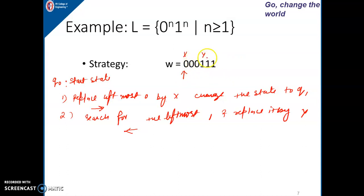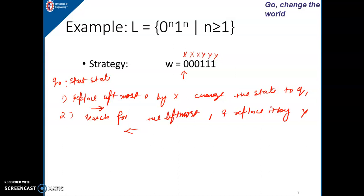We move towards the right direction in search of the first 1. The leftmost 1 will be the first 1, and it is replaced by y. Then we come towards the left direction in search of the second 0. When we get the second 0, we replace it by x and go right in search of the second corresponding 1, replace it by y, and repeat. So 0 will be replaced by x and 1 will be replaced by y.